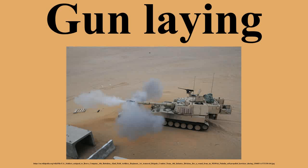Gun laying means moving the axis of the bore of the barrel in two planes: horizontal and vertical. A gun is traversed — rotated in a horizontal plane — to align it with the target, and elevated — moved in the vertical plane — to range it to the target. Gun laying is a set of actions to align the axis of a gun barrel so that it points in the required direction, in the horizontal and vertical planes.